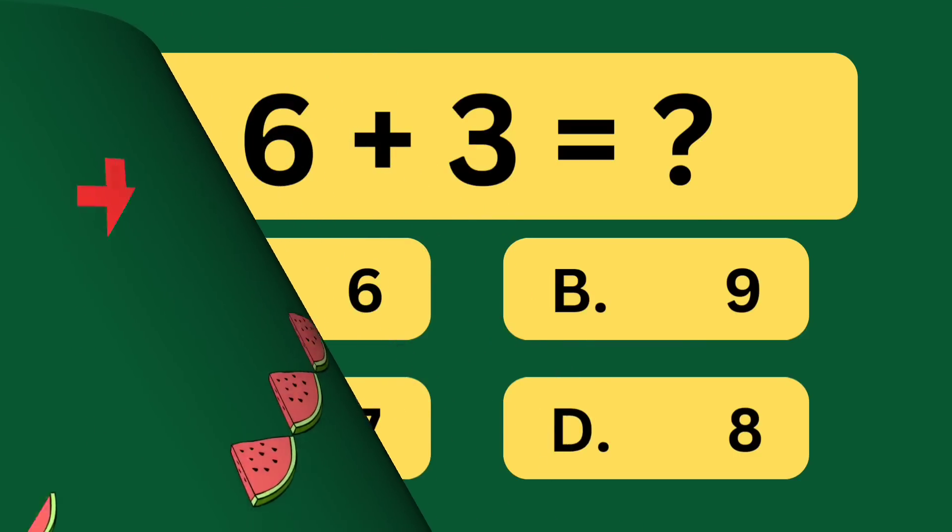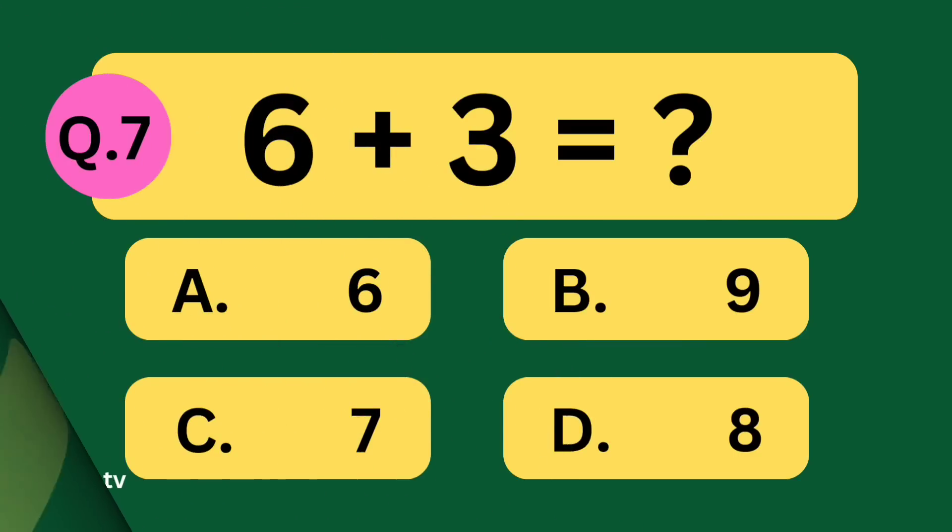6 plus 3 equal what? A: 6, B: 9, C: 7, D: 8.